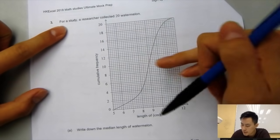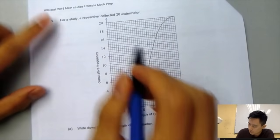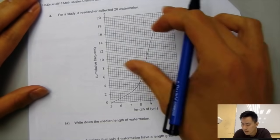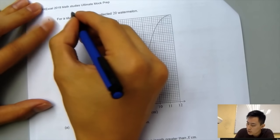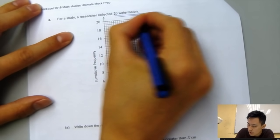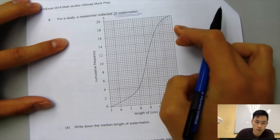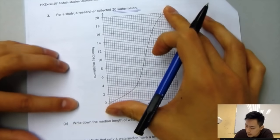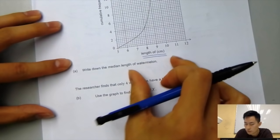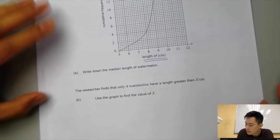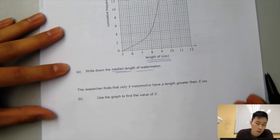Question three for Math Studies, cumulative frequency questions. For this one, I'll be choosing some harder questions. For a study, a researcher collected 20 watermelons. The total here would be 20 watermelons, and we're measuring the length of the watermelon. Write down the median length of the watermelon.